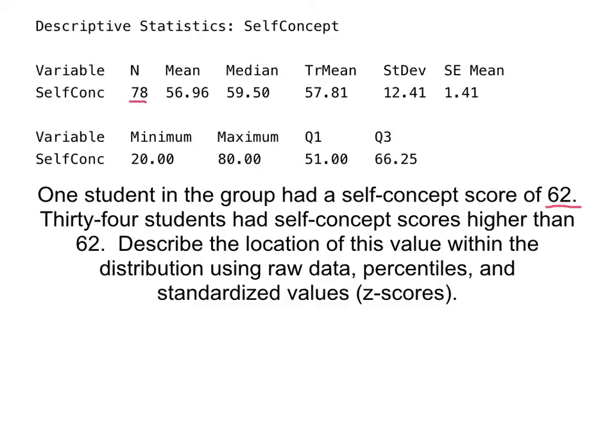So in terms of percentiles, we know that percentile means at or below, and there were 44 students who were at or below 62 out of 78. And so that puts us in the—we can just kind of round—the 56th percentile.